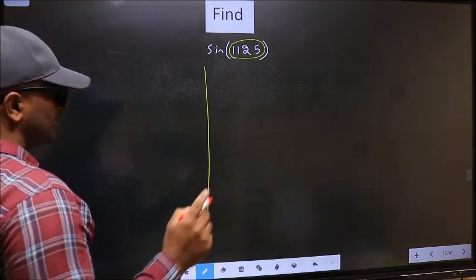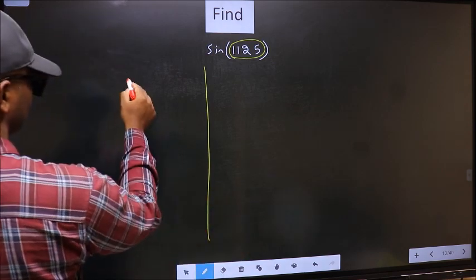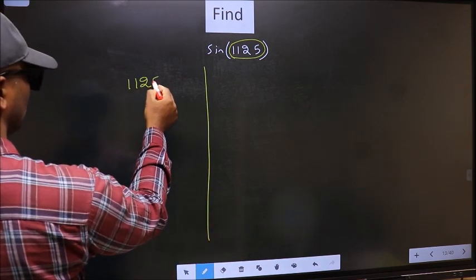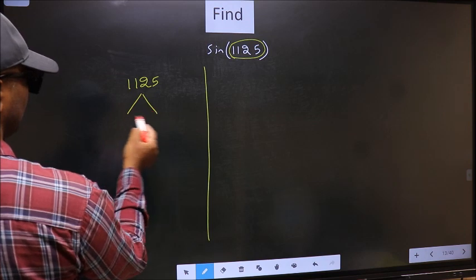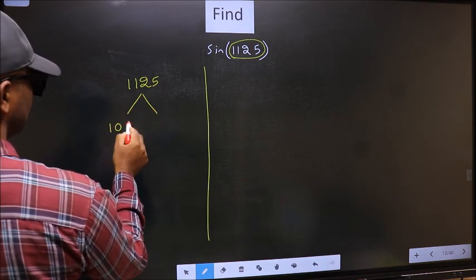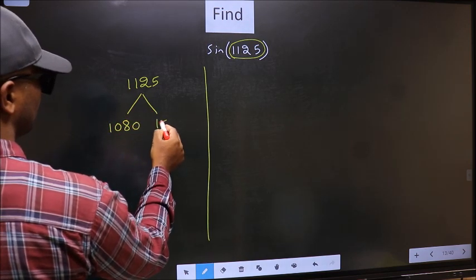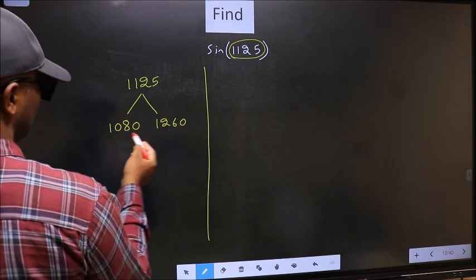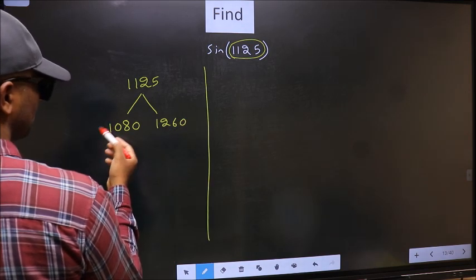What I mean is, 1125 lies between 1080 and 1260. This is 180×6 and this is 180×7.